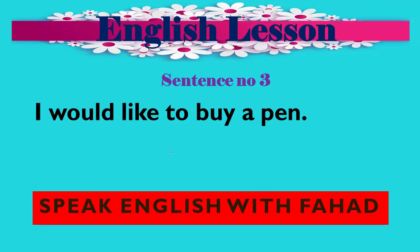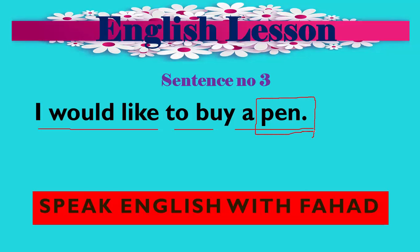Sentence number 3: 'I would like to buy a pen.' 'I would like to' — مَیں پسند کروں گا — to buy a pen — ایک pen خریدنا — مَیں ایک pen خریدنا پسند کروں گا. Should, would, and could have different definitions; here 'would' is about your wish. 'I would like to buy a pen.' You can substitute pen with cell phone, car, book, pencil — whatever you like.